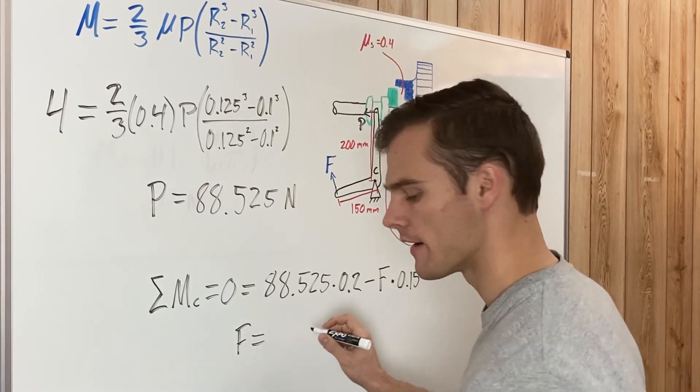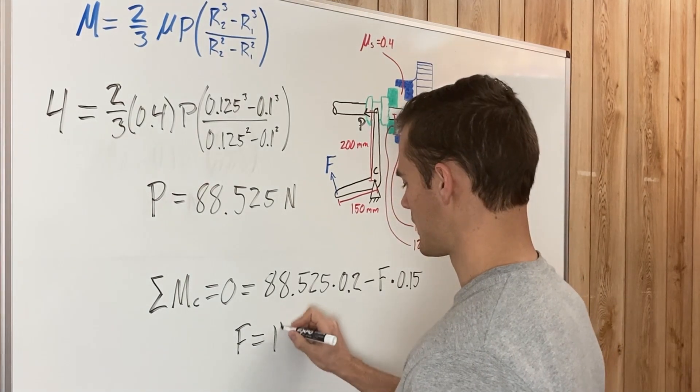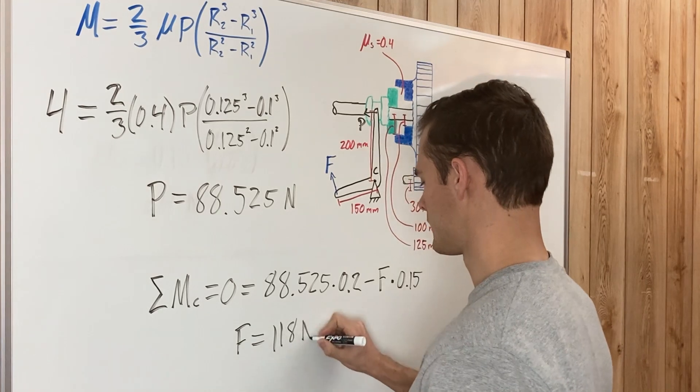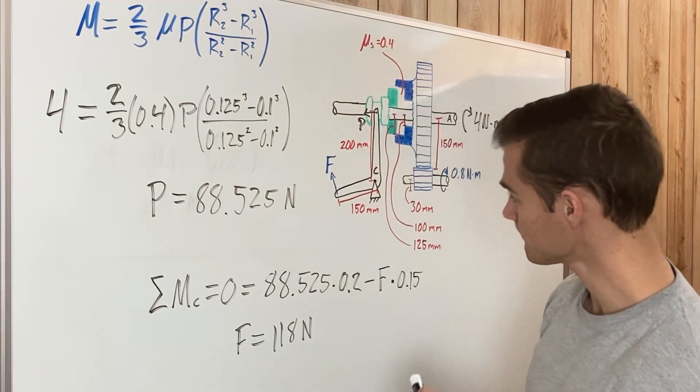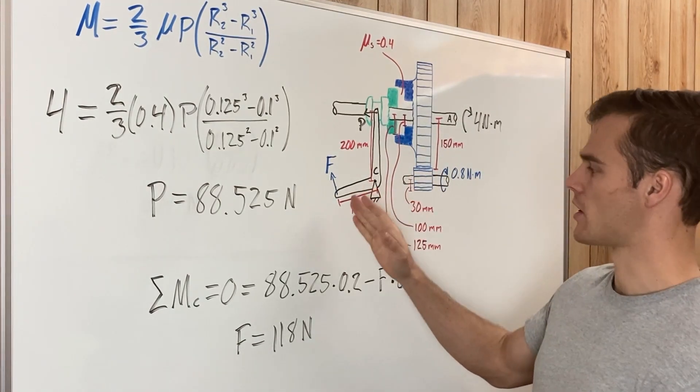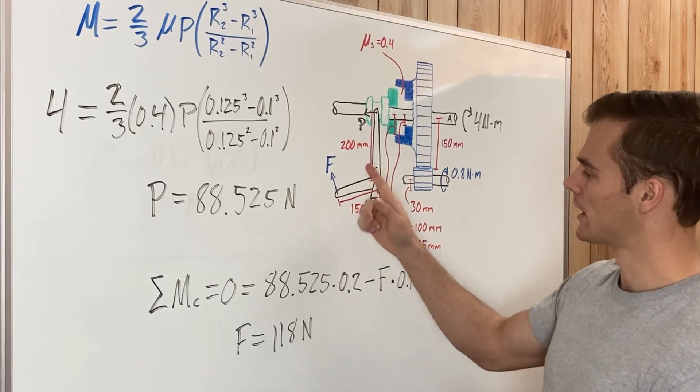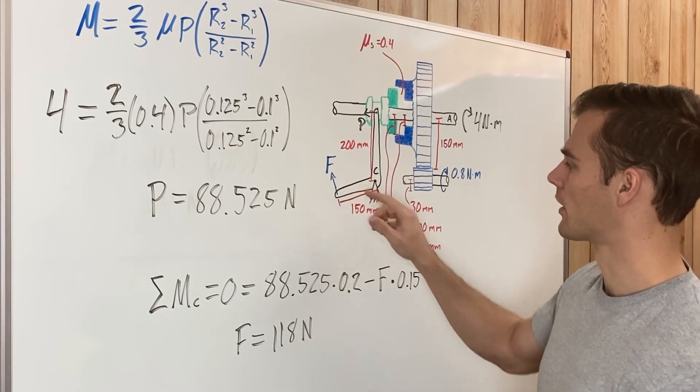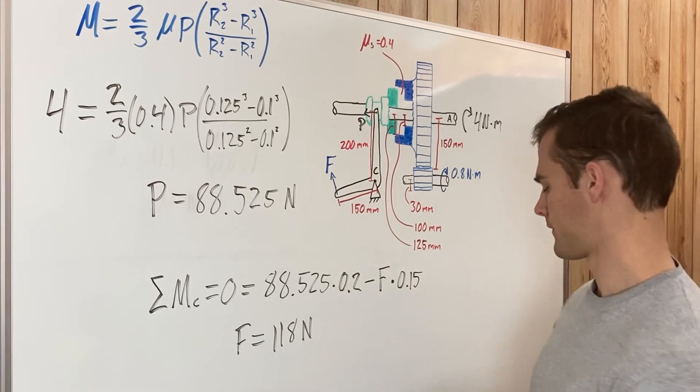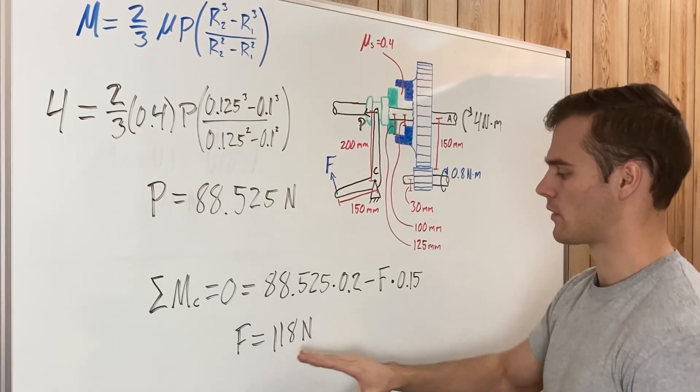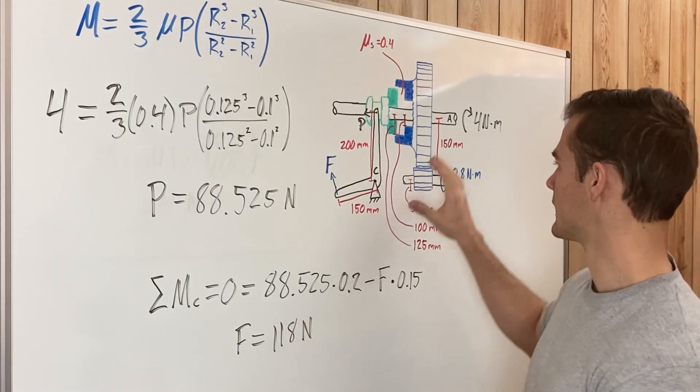Now adding this over the other side and dividing by 0.15 on both sides, we can solve for F. And we find that F equals 118 newtons. So that is how hard we need to be pulling up right here, perpendicular to this arm at F with a force of 118 newtons to get this whole mechanism to stop.